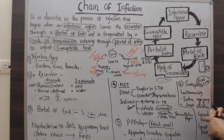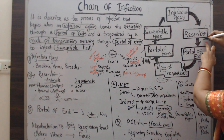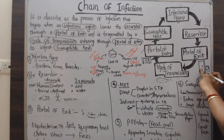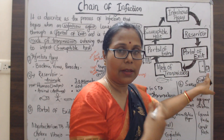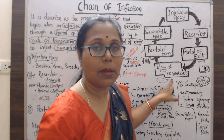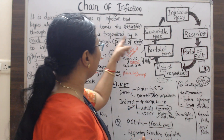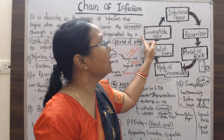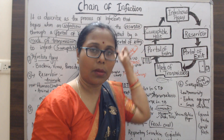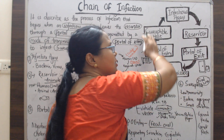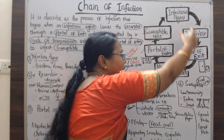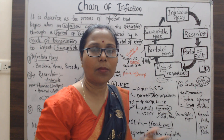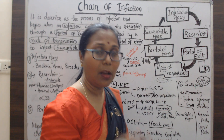Now try to understand this through a picture diagram. The infectious agent leaves the reservoir through the portal of exit — here I show a picture of a door with a virus or microorganism coming out. It is then transmitted by a mode of transmission, entering the susceptible host through the portal of entry, completing the infection cycle. These six components are interrelated and interlocked — that is why it is called the chain of infection. If any break occurs in one link of the chain, the transmission of infection will not occur.